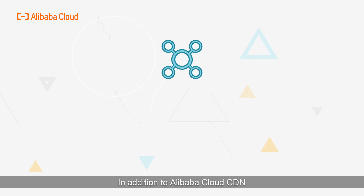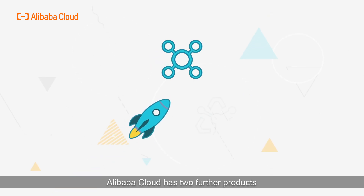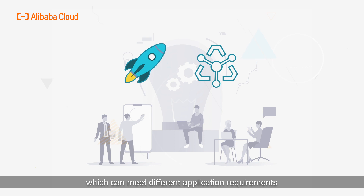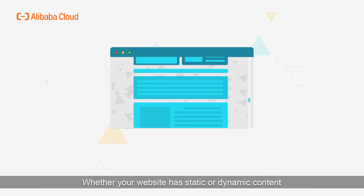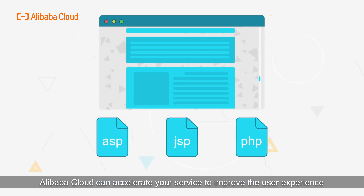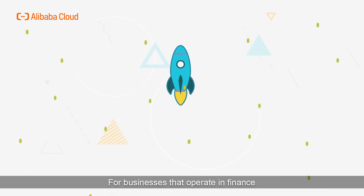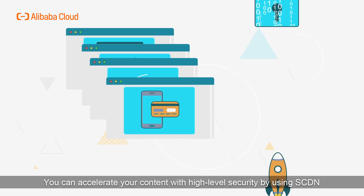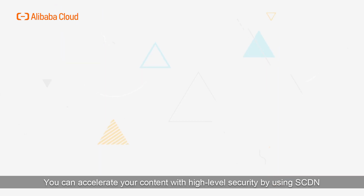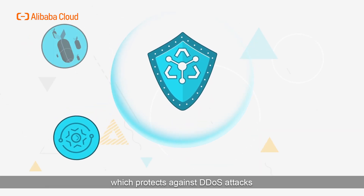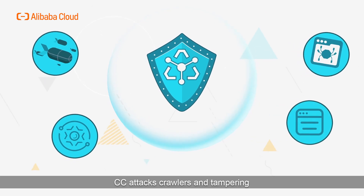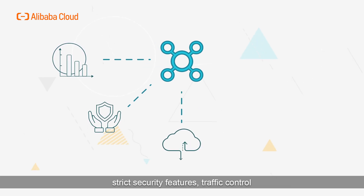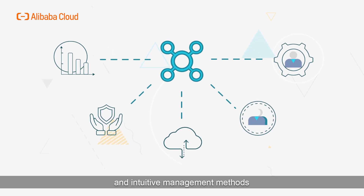In addition to Alibaba Cloud CDN, Alibaba Cloud has two further products: Dynamic Route for CDN (DCDN) and Secure CDN (SCDN), which can meet different application requirements. Whether your website has static or dynamic content, Alibaba Cloud can accelerate your service to improve the user experience. For businesses in finance, government, e-commerce, or gaming where security is a top priority, SCDN can accelerate your content with high-level security, protecting against DDoS attacks, CC attacks, crawlers, and tampering.